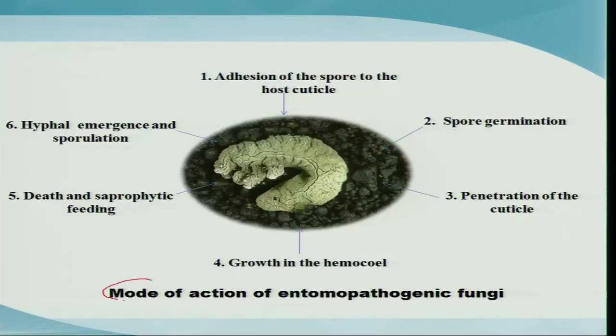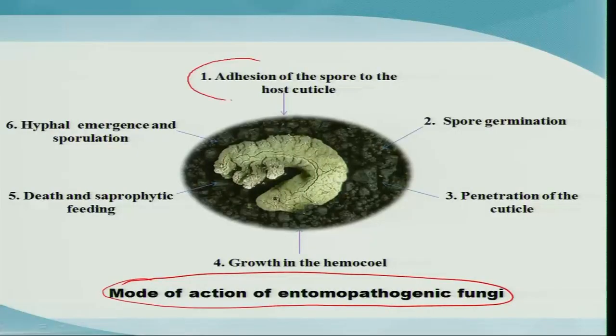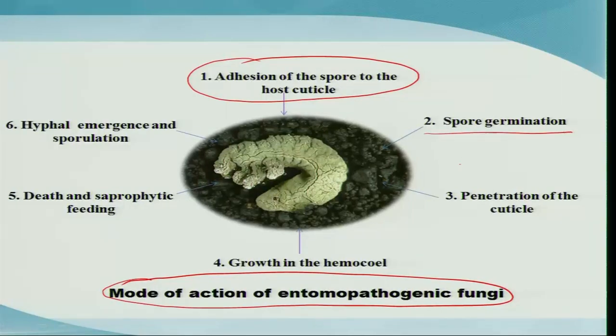Now let us look at the mode of action of entomopathogenic fungi. Generally, fungi produce spores, and these tiny spores are carried by wind or water, settling on the substratum. Whenever they come in contact with the insect cuticle, they begin their action. The first step is the adhesion of spores to the host cuticle, after which the spore starts germinating and produces hyphal bodies or mycelia.